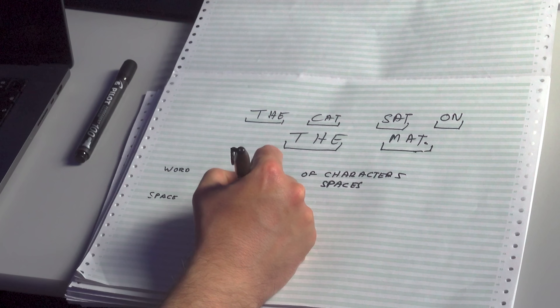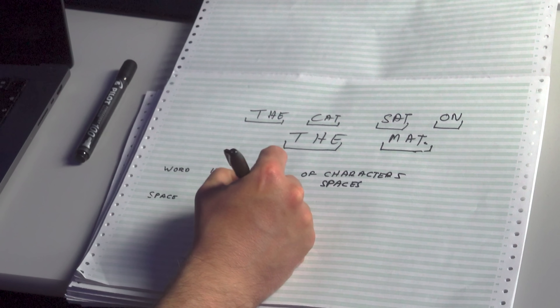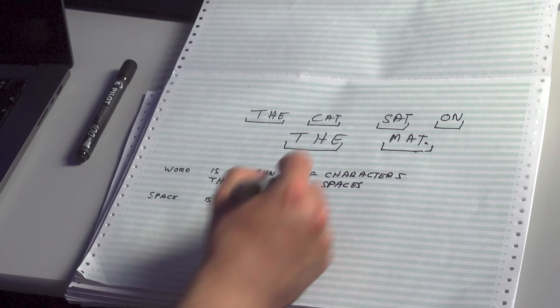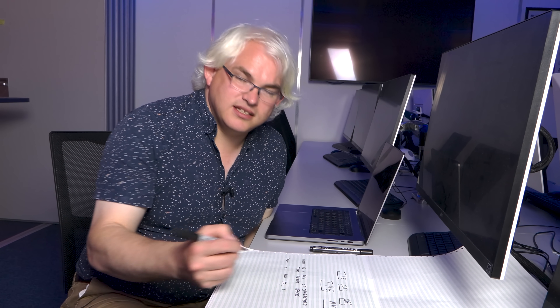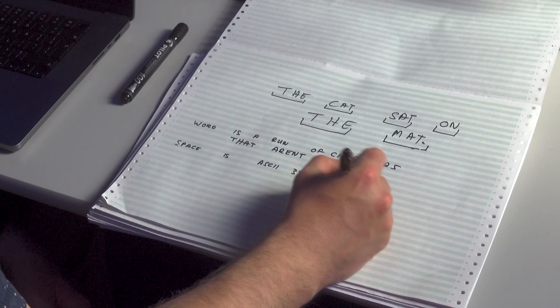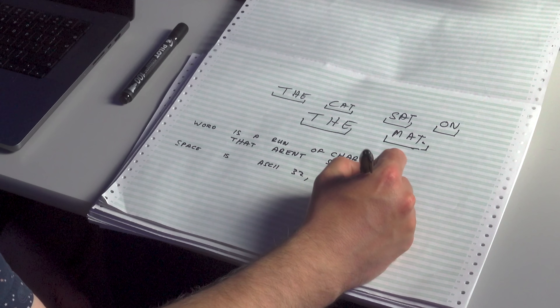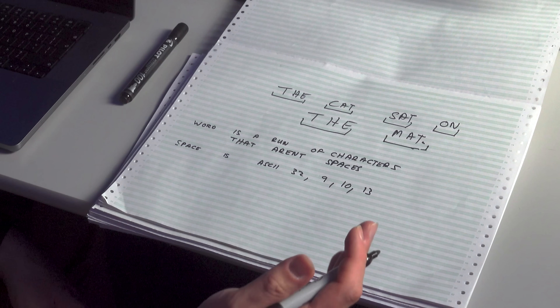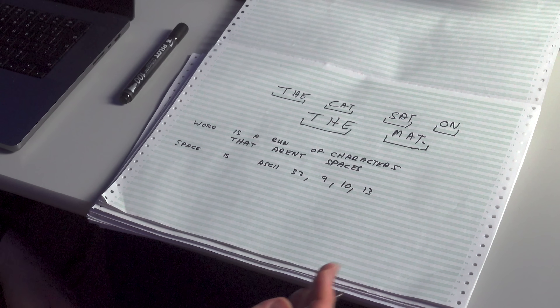A space is ASCII 32 — the normal space. We probably want to include the tab character, which is ASCII 9, and line feed and carriage return — ASCII 10 and 13 — probably some others. The point is we have to define what these things are.